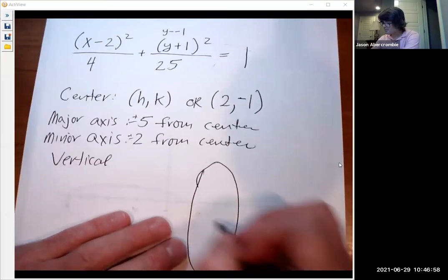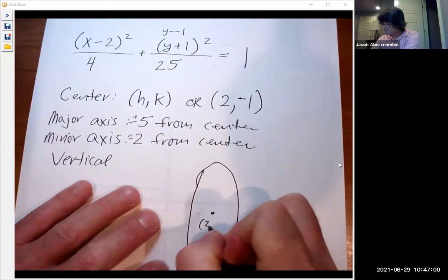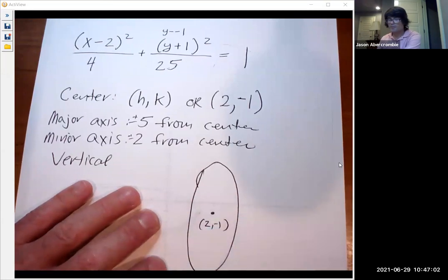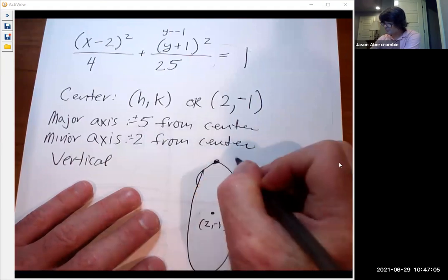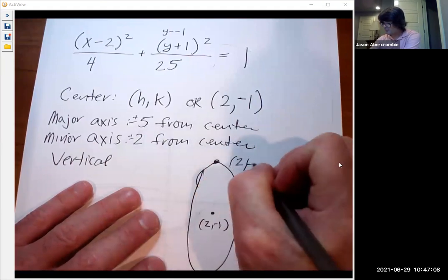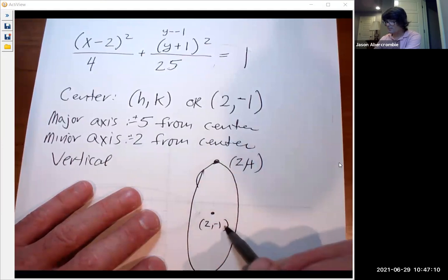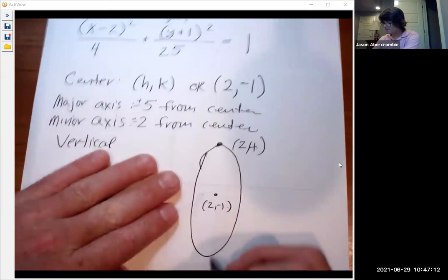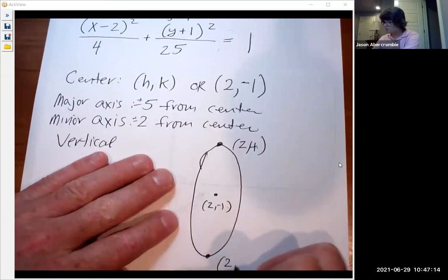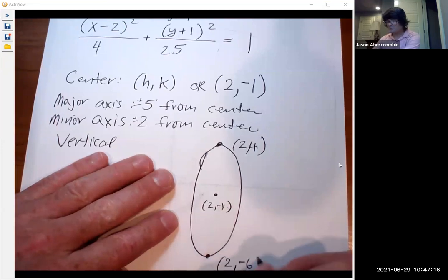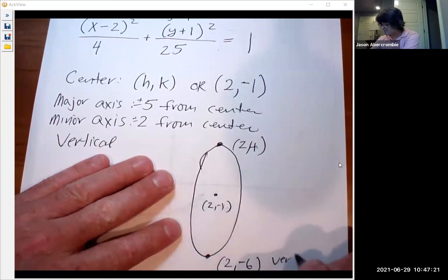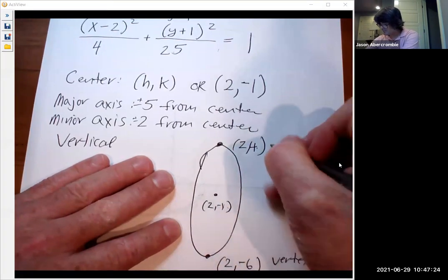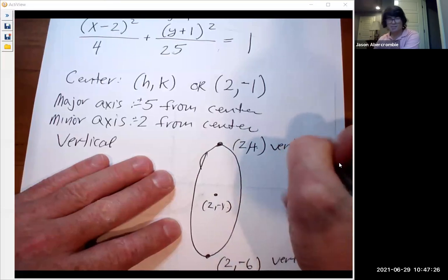The center is at two negative one. We're going to go up five to two comma four because we go from negative one up five to four. And then we're going to go down five to two negative six because we go down five from negative one to negative six. Those are my vertices. This is a vertex, and this is a vertex.